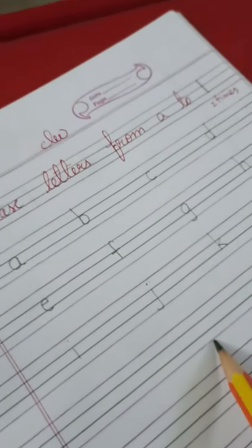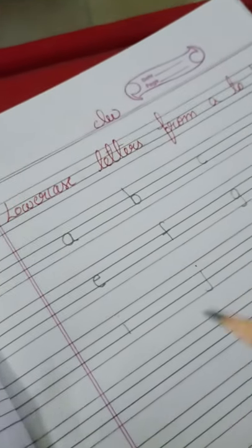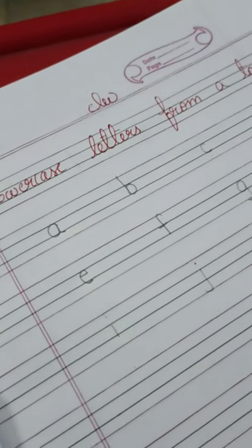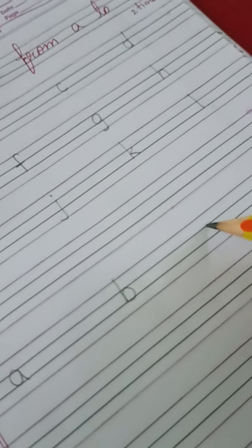Here, after L, you have to leave one line. Yes, after L, you have to leave one line. Next, again you have to start letter A. Take finger space and write, children.